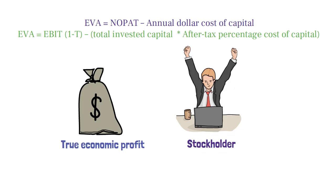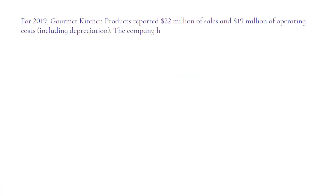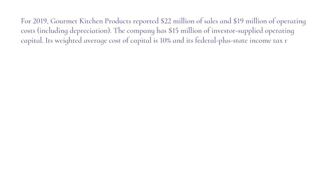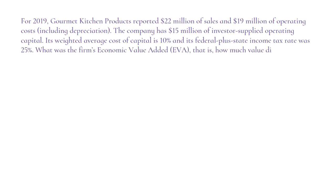Let's solve an EVA problem. For 2019, Gourmet Kitchen Products reported 22 million of sales and 19 million of operating cost. The company has 15 million of investor-supplied operating capital. Its weighted average cost of capital is 10% and tax rate is 25%. What was the firm's EVA?